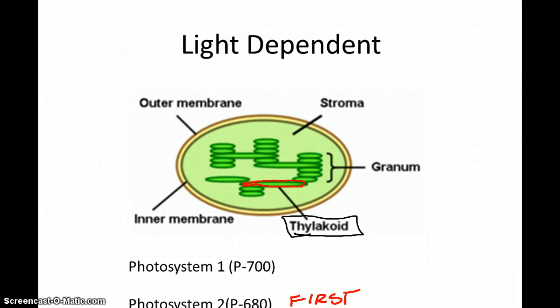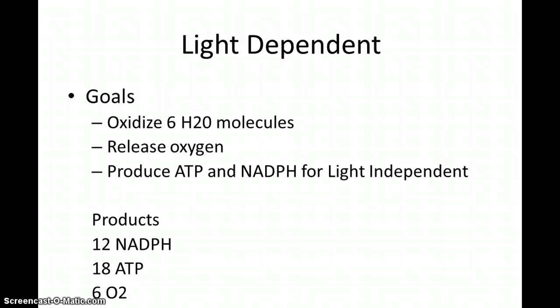What we must also understand is that the products of light-dependent fuel light-independent. The goals of light-dependent are to oxidize six water molecules (oxidize meaning lose electron), release oxygen, and produce ATP and NADPH for light-independent. The products are 12 NADPH, 18 ATP, and 6 oxygen molecules.